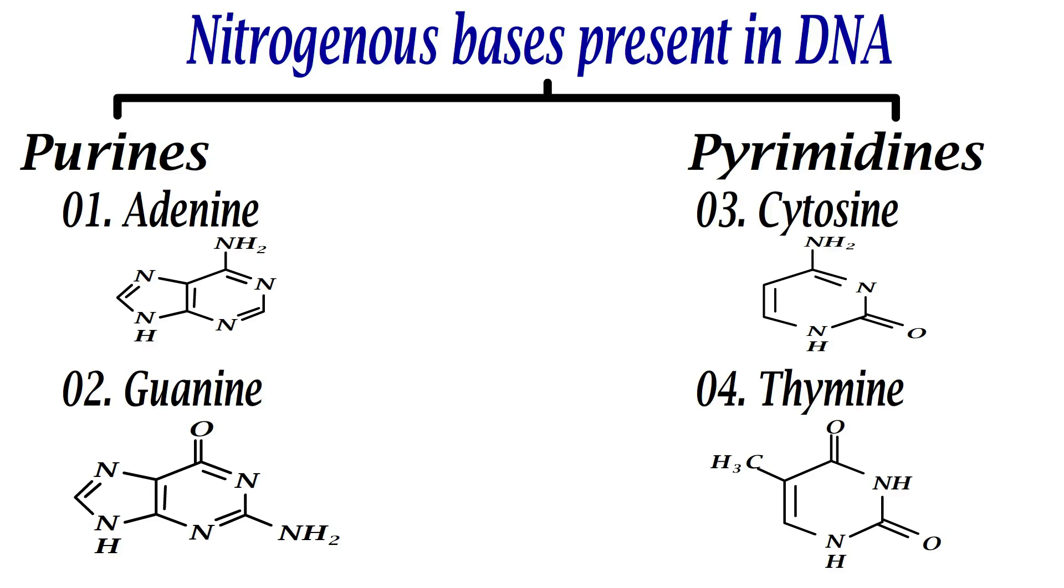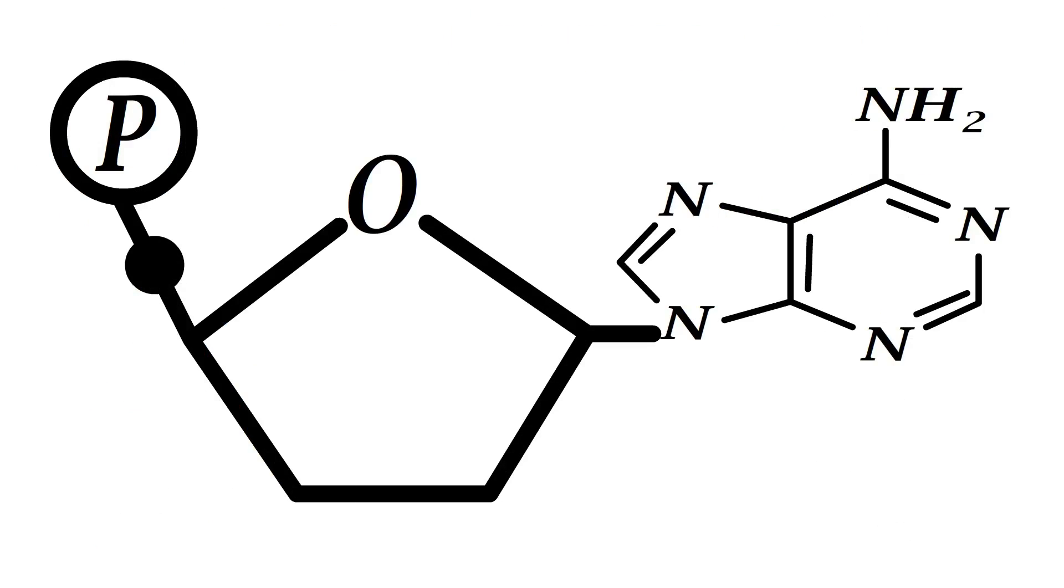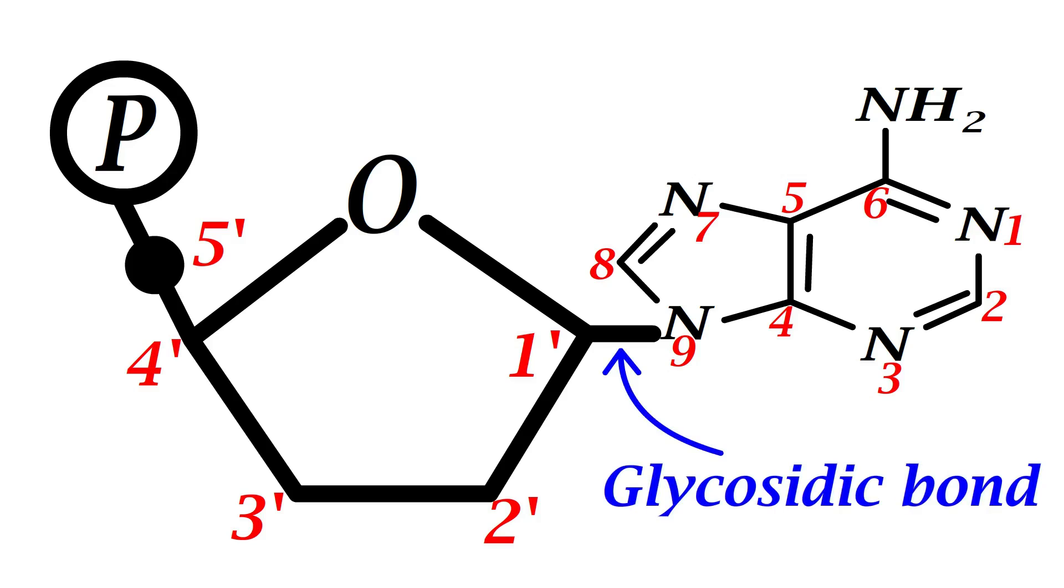In a nucleotide, the carbons of the nitrogen base are numbered as 1, 2, 3, and so on, and those of the sugar are numbered as 1 prime, 2 prime, 3 prime, and so on. When a nucleotide is formed, the nitrogen base is linked to the carbon 1 prime of the sugar by glycosidic bond.